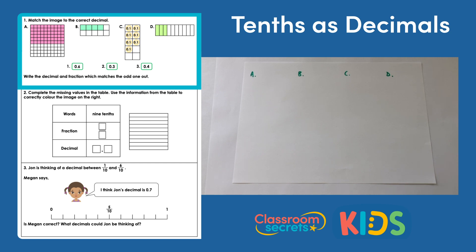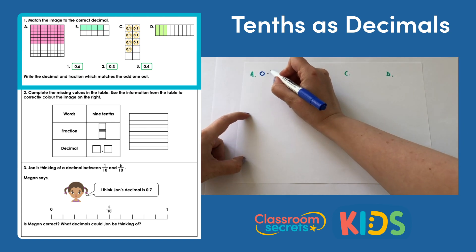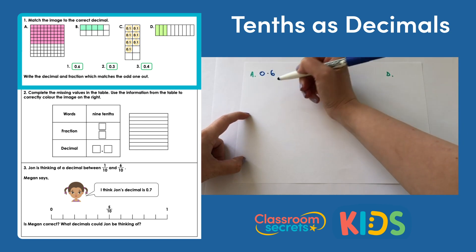We'll start with A. I have a hundred square. I know that in a hundred square one entire row shaded represents one tenth, and I can see on my hundred square I have one, two, three, four, five, six rows. That means it represents six tenths, which I can write as 0.6.